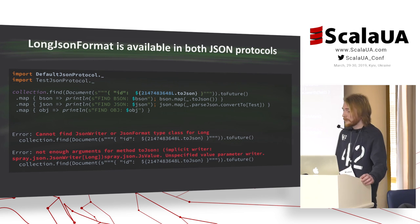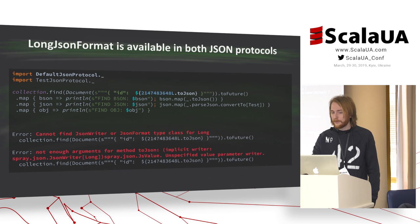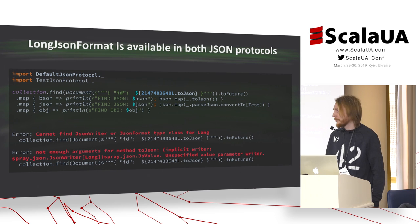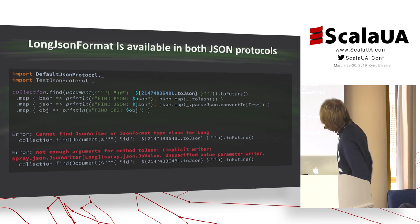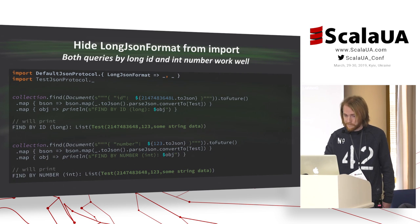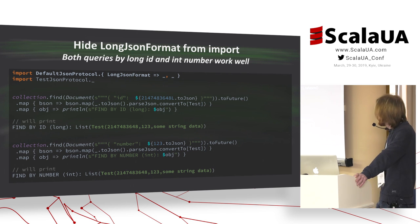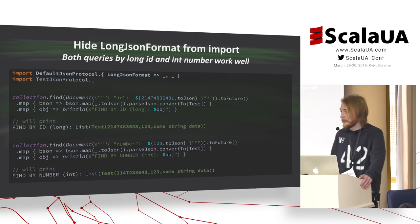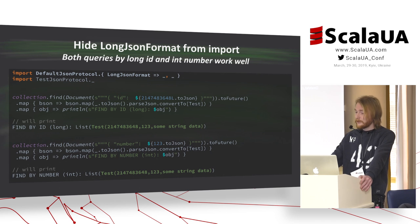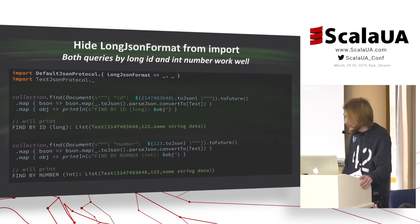Unfortunately, in this case, the first query by long ID will not compile because the long JSON format is available in both JSON protocols — in the default JSON protocol and in TestJSON protocol. To solve this issue, the long JSON format should be hidden from the import again. After that, all queries will work as expected: first query by long ID number and second by int number.